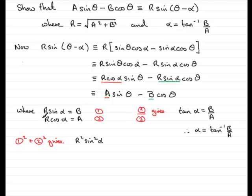And if I square 2, I'm going to get R squared cos squared alpha equals A squared. And if I add those two together, I've got R squared sine squared alpha plus R squared cos squared alpha is equal to B squared plus A squared.